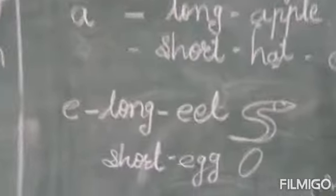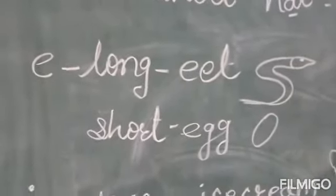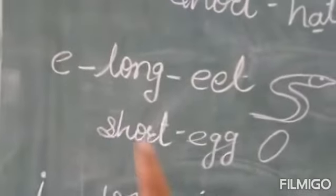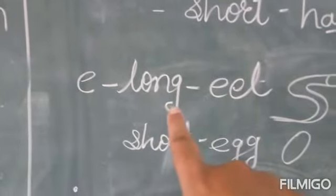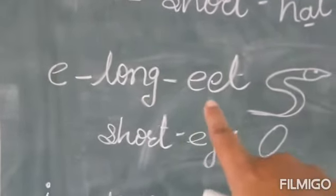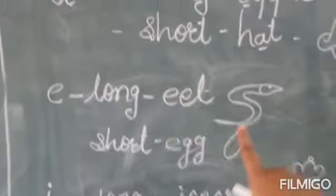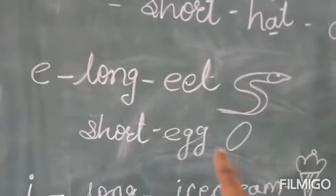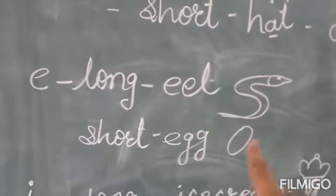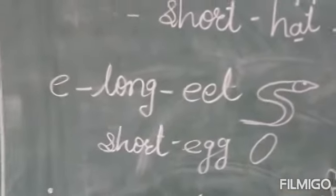Now E also has two sounds, long and short. So the long sound of E is E, E, E, eat. The short sound is E, E, E, egg. I know this does not look like an egg.